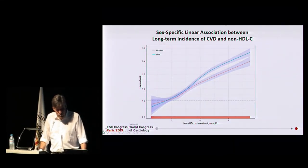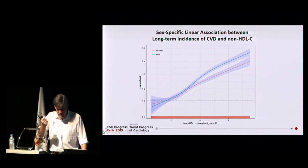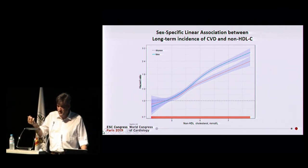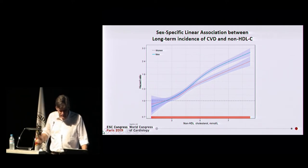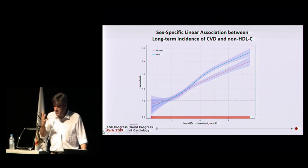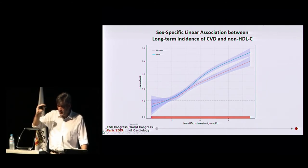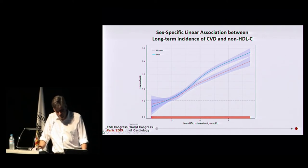To make a long story short, particularly for Asia and Africa, we want to make very clear that modifiable risk factors — such as smoking, lipid values, diabetes, and hypertension — if they are modified, we can save a substantial fraction of cardiovascular events worldwide, particularly in Europe, because there we have the highest percentage of modifiable cardiovascular risk factors.